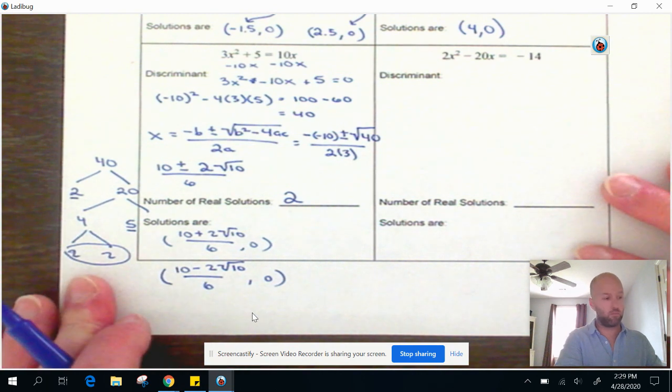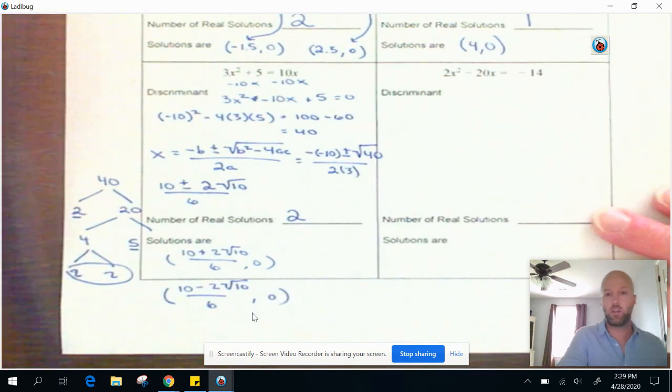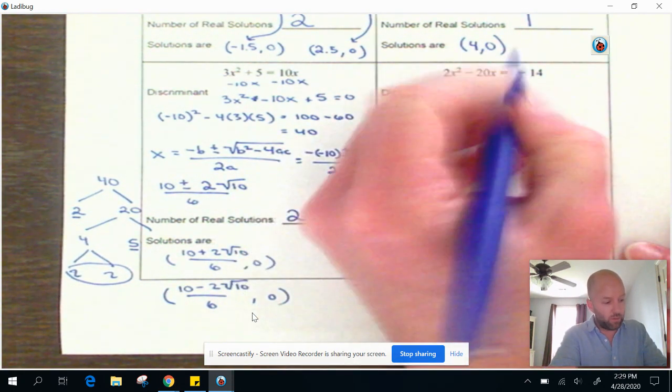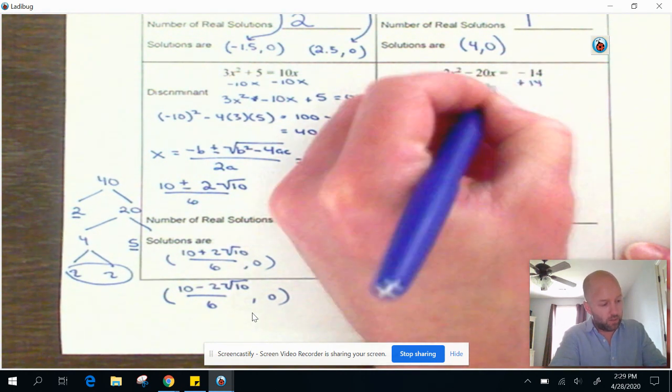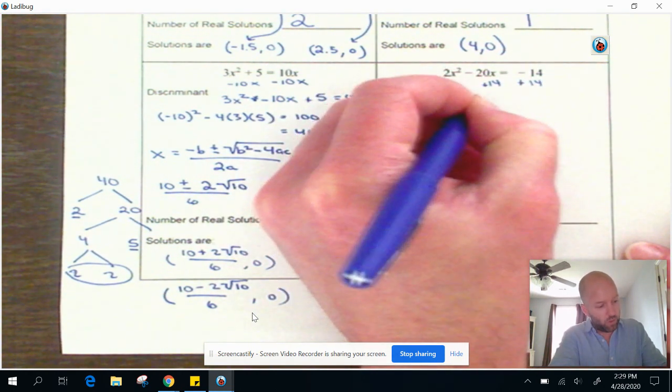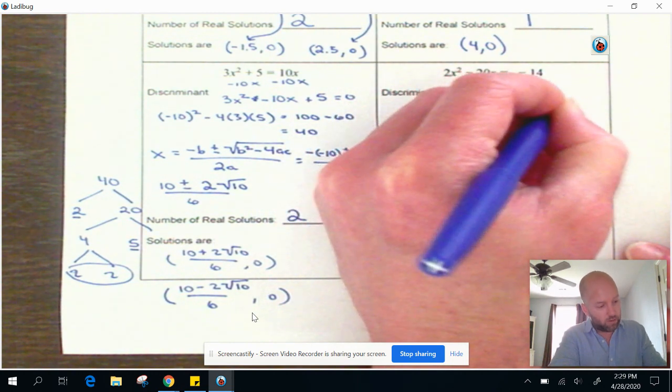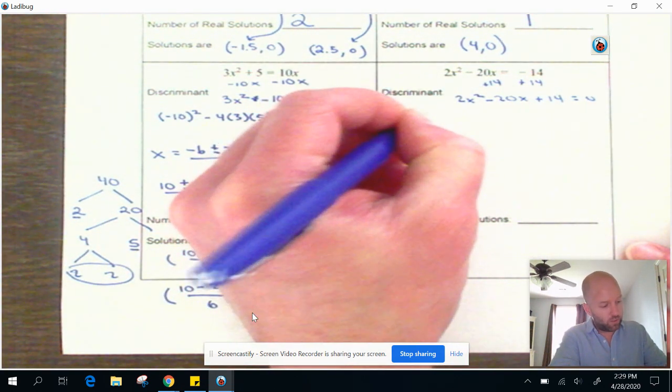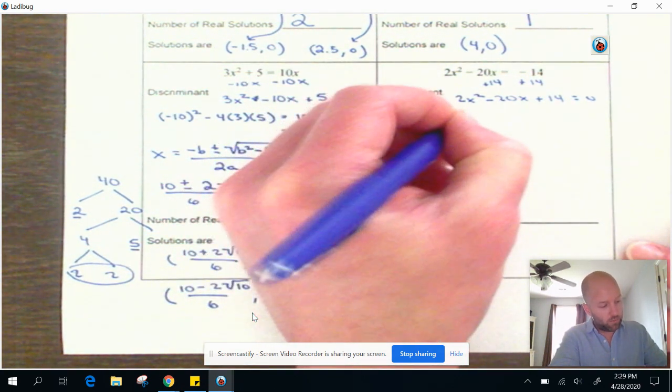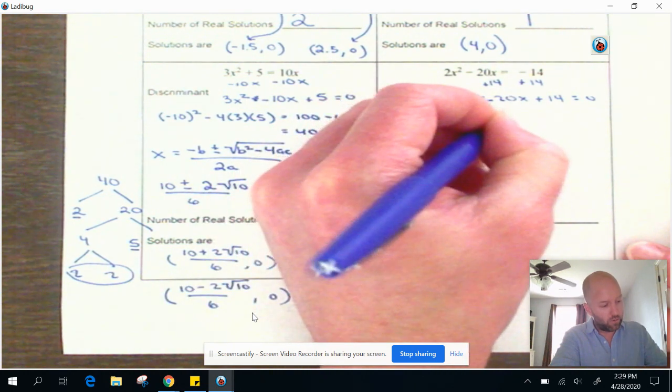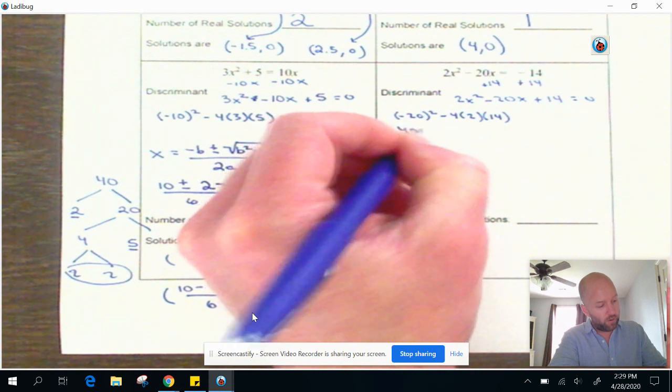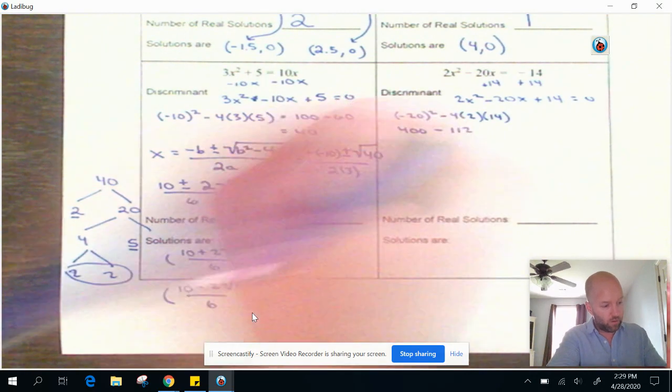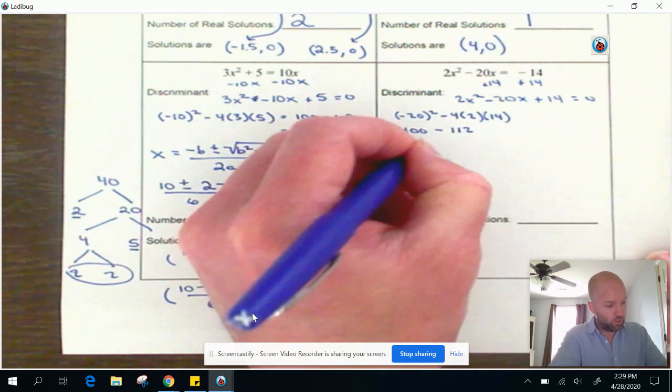All right. Let's jump to the last one. And then we can be done with this lesson. Remember, we're just practicing using the quadratic formula. So this negative 14 is not over here. We need it to be over there so that it can be in proper standard form. So add 14 to both sides. That leaves us with 2x squared minus 20x plus 14 equals 0. So the discriminant is B squared. So negative 20 squared minus 4 times A, which is 2, and times C, which is 14. All right. This is 400. And we're going to take away the product of those three numbers is 112. And then the difference there is 288.